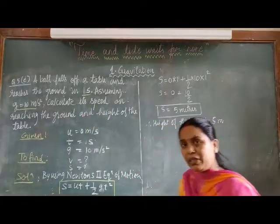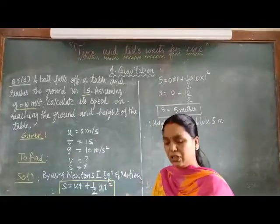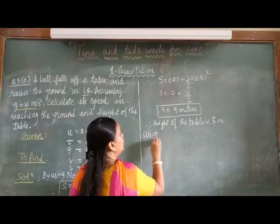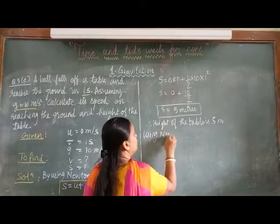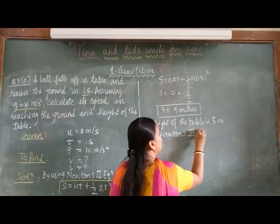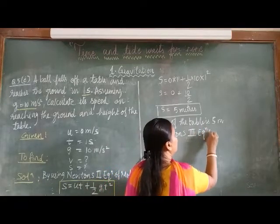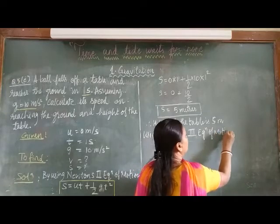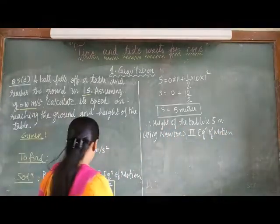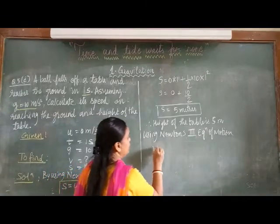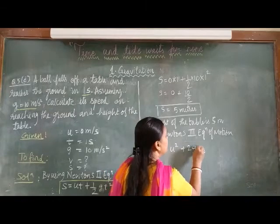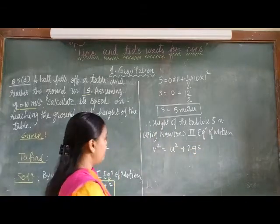For finding V, we will use Newton's third equation of motion. So, using Newton's third equation of motion. We have the formula, V square is equal to U square plus 2 G s. We will substitute in the formula.